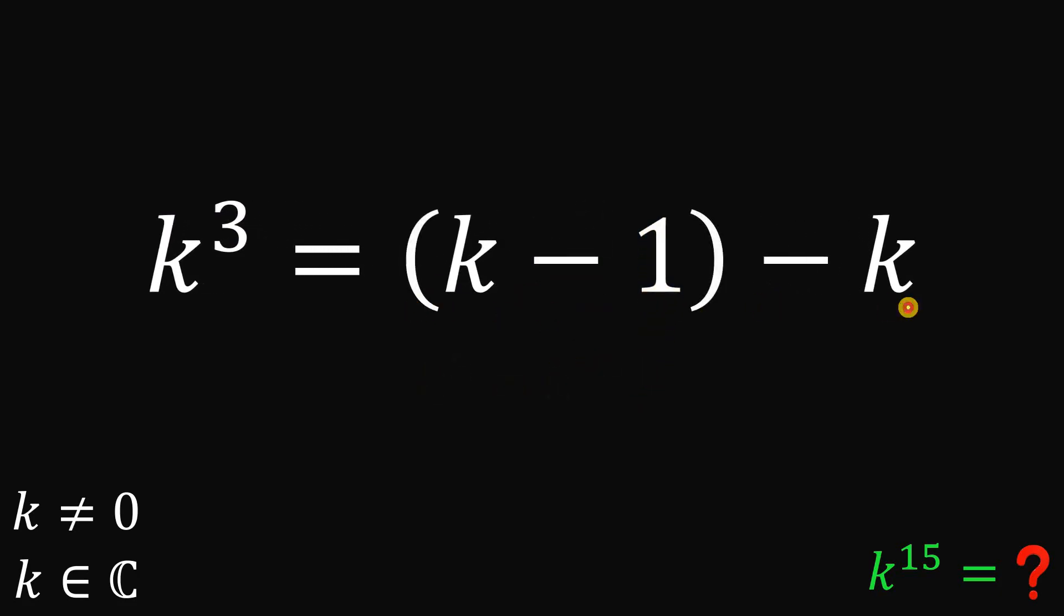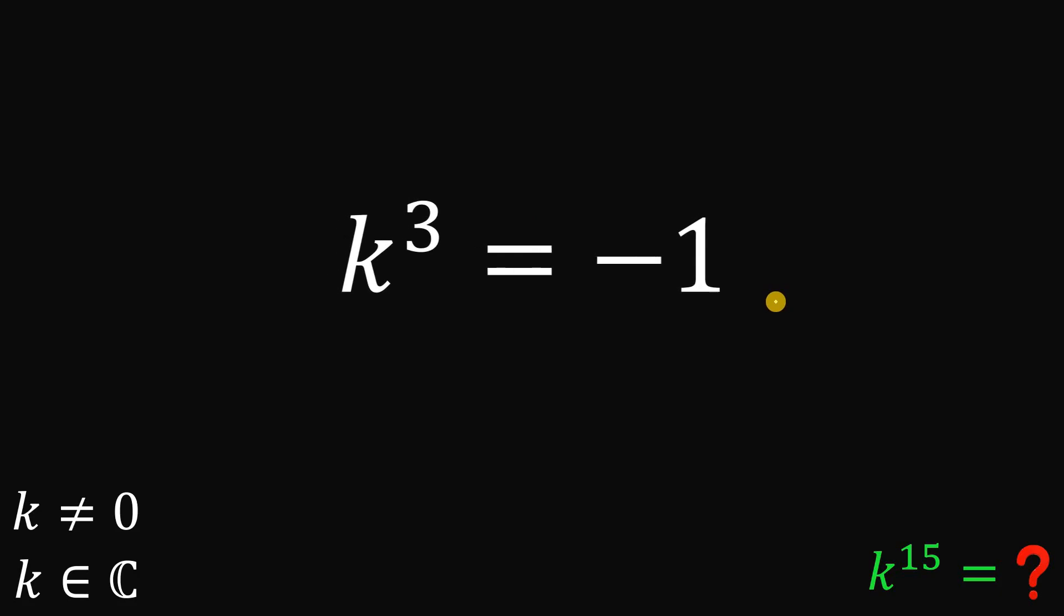Now k minus k, this is just cancel out or simply equal to 0. So we have k cubed equals negative 1.